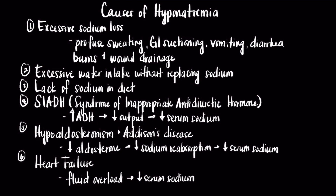SIADH, or syndrome of inappropriate antidiuretic hormone, is a disease that leads to hyponatremia. In SIADH, there is an abnormal increase in production of ADH from the pituitary gland in the brain, thus causing an increased reabsorption of water in the kidneys, ultimately leading to low levels of sodium due to the increased amounts of water that's reabsorbed.